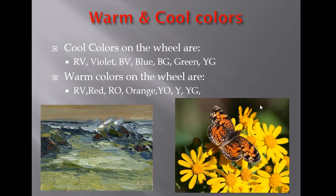Our fifth set deals with dividing the color wheel in half. Drawing a line across the center — between red-violet and yellow-green — gives us two halves. The cool colors are red-violet, violet, blue-violet, blue, blue-green, green, and yellow-green. The warm colors are the other half: red-violet, red, red-orange, orange, yellow-orange, yellow, and yellow-green.